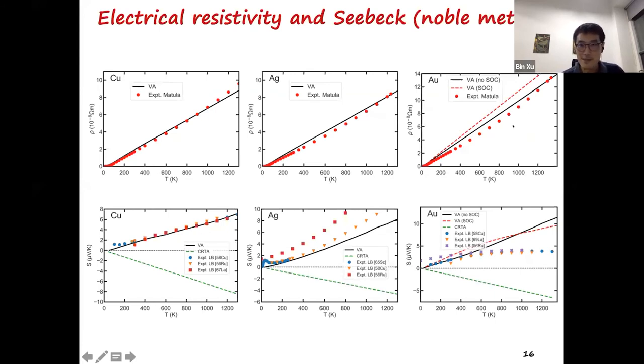For resistivity for these three metals, the variational approach gave very good agreement with experiments. For gold, because it's a heavy element, so we also consider spin-orbit coupling. It doesn't change the result very much. For the Seebeck coefficient in copper, the agreement is very good for both low and high temperatures. For silver and gold, the agreement is rather good at low temperature, but at high temperature silver case has some underestimation. For gold, it's overestimation. And experimental data may have a small hump at low temperature, which is due to the phonon drag effect, which we don't include in our calculations. And in all three cases, the constant RTA approach wrongly predicts the sign of the Seebeck. It predicts negative Seebeck, but it should be positive.